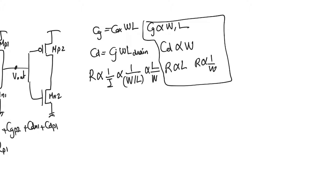But if you increase the width of the transistor, you end up with more capacitance but less resistance. So the question is: is it good to increase W or not? The answer depends on the balance of self-loading and external loading. Because R and capacitance have opposing dependences on W, there is a possibility of optimization — unlike with L, where everything moves in the same direction.